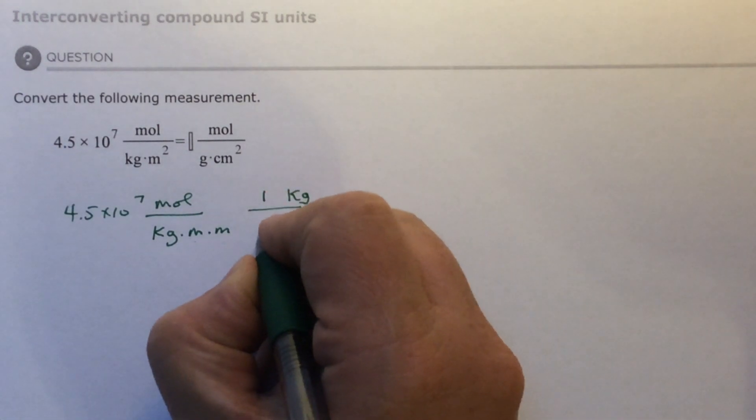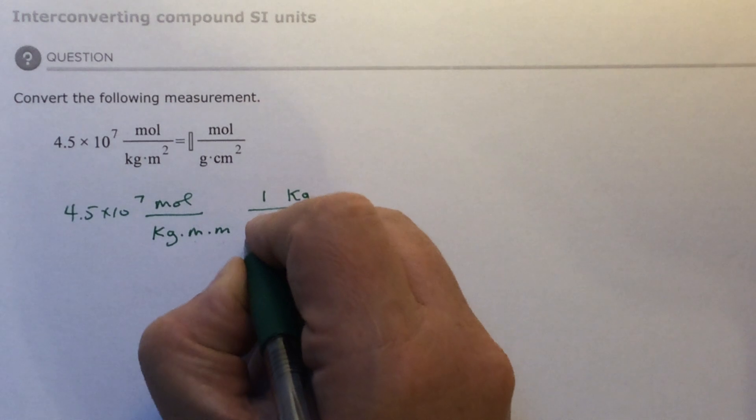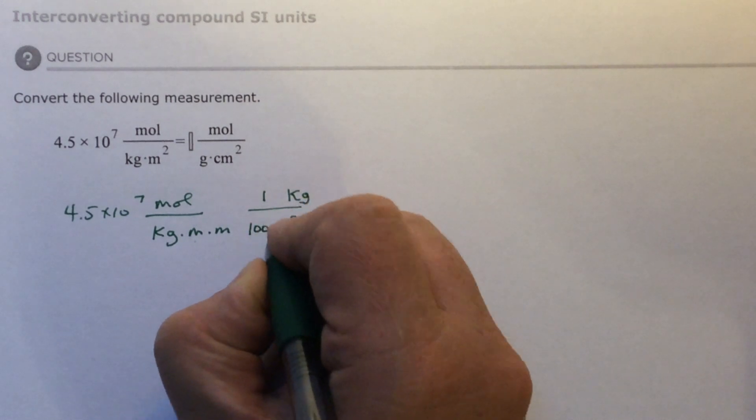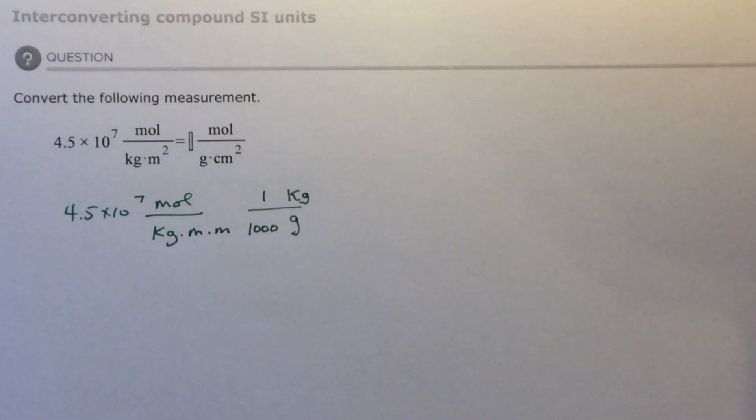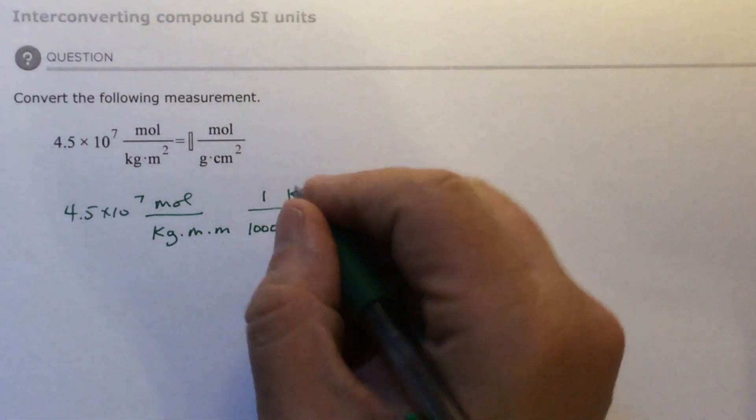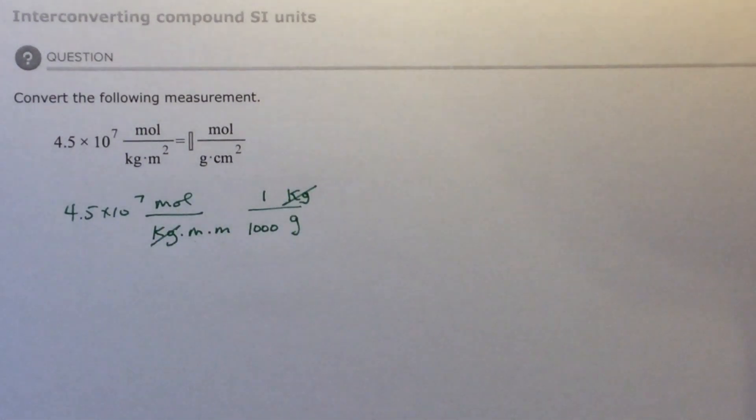So I'm just going to write 1,000, 1,000 grams in a kilogram. Now kilograms have canceled because I have one on the bottom and one on the top.